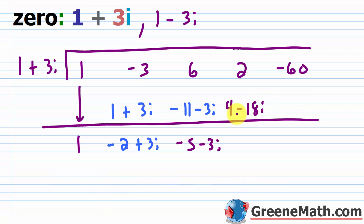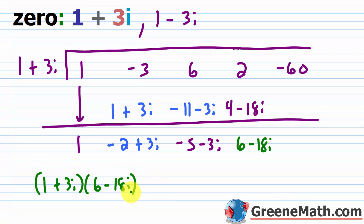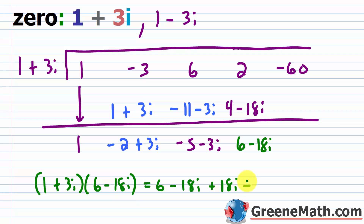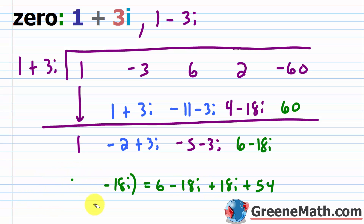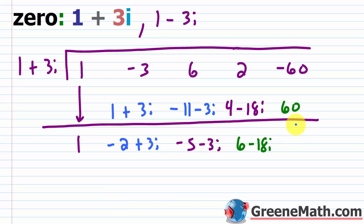Adding 2 plus (4 minus 18i) gives 6 minus 18i. For the last multiplication, (1 plus 3i)(6 minus 18i): 1 times 6 is 6; 1 times negative 18i is minus 18i; 3i times 6 is plus 18i — those cancel; 3i times negative 18i is negative 54i squared, and since i squared is negative 1, that's plus 54. So 6 plus 54 is 60. Adding to negative 60 gives zero remainder, which is expected since 1 plus 3i is a known zero.